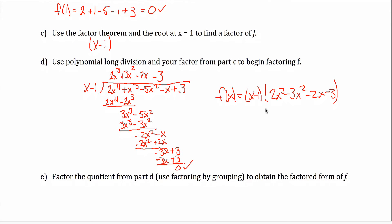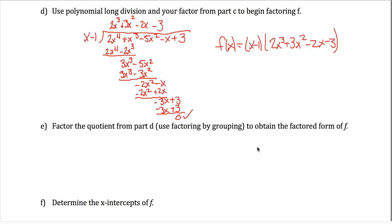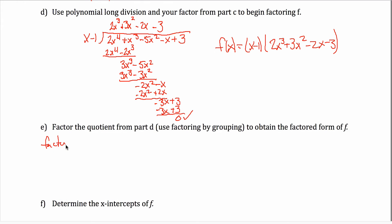Part E says to factor the quotient from part D further, using factor by grouping, to obtain the final factored form of f. So let's factor 2x³ + 3x² − 2x − 3. In the first group, the greatest common factor is x², so pulling that out leaves (2x + 3), which becomes my target.